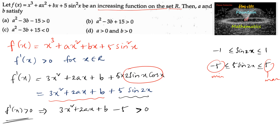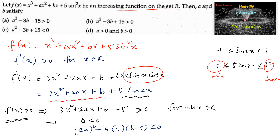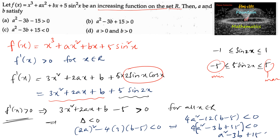This is a quadratic inequality. Since 3x² + 2ax + b - 5 is positive for all x ∈ R, its discriminant must be less than 0. So discriminant: (2a)² - 4(3)(b - 5) < 0, giving 4a² - 12(b - 5) < 0, or 4a² - 12b + 60 < 0, which simplifies to a² - 3b + 15 < 0. This is option C, so option C is the answer.